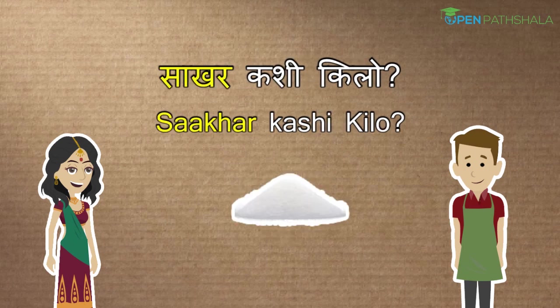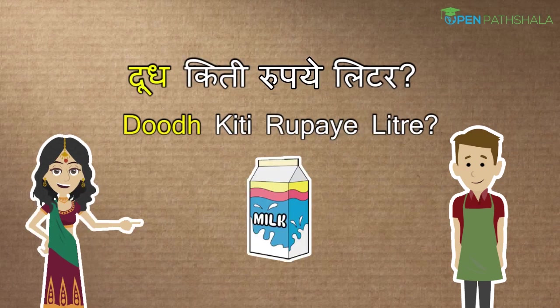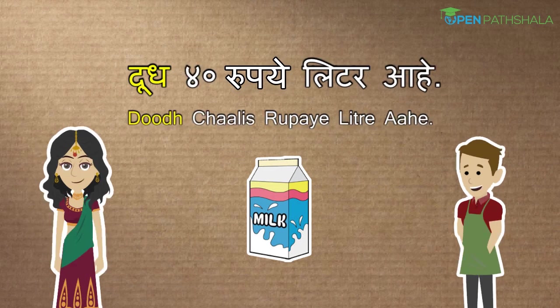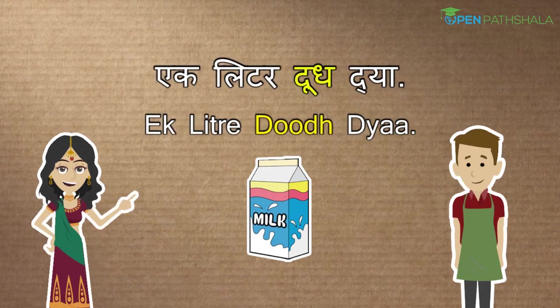Saakhar kashi kilo means how much for a kilo of sugar? Then she asked, doodh kiti rupayah litr — how much for a litre of milk? The shopkeeper replied, doodh 40 rupayah litr ahi, meaning milk is 40 rupees a litre. She then said, ek litr doodh dhyah, meaning give a litre of milk.